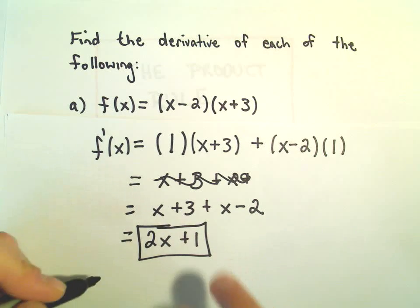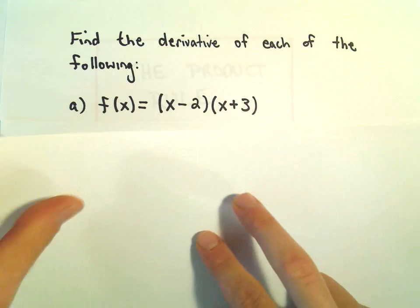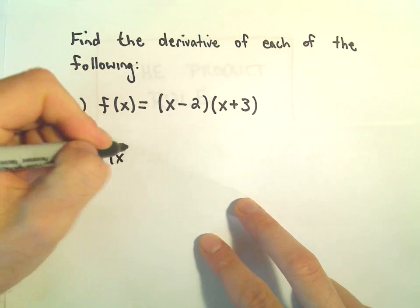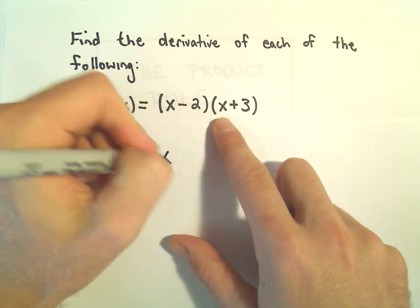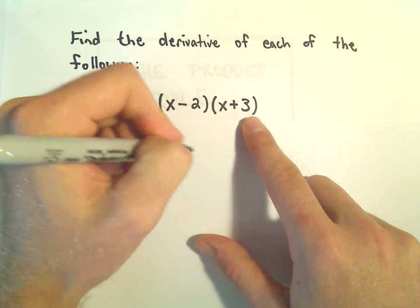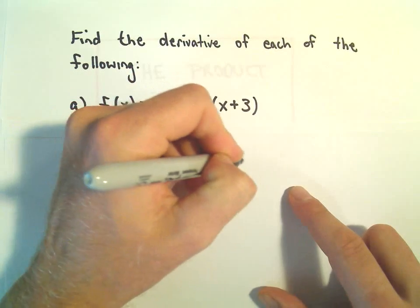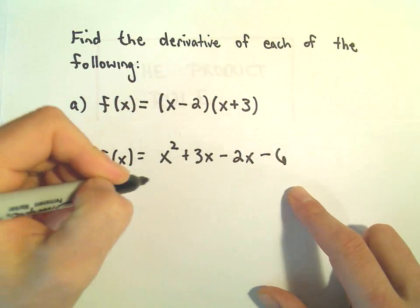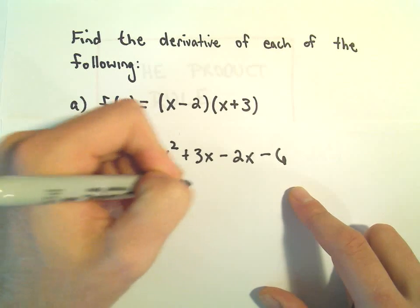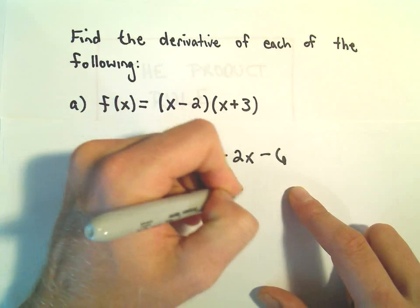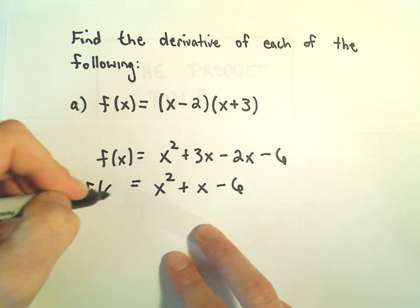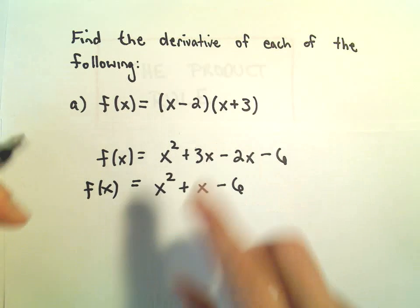Notice if you had distributed this out at the very beginning. If you had distributed it out, we would have x times x which is x², we would have a positive 3x, negative 2x, minus 6, so we would have x² + x - 6 if we did the multiplication first.